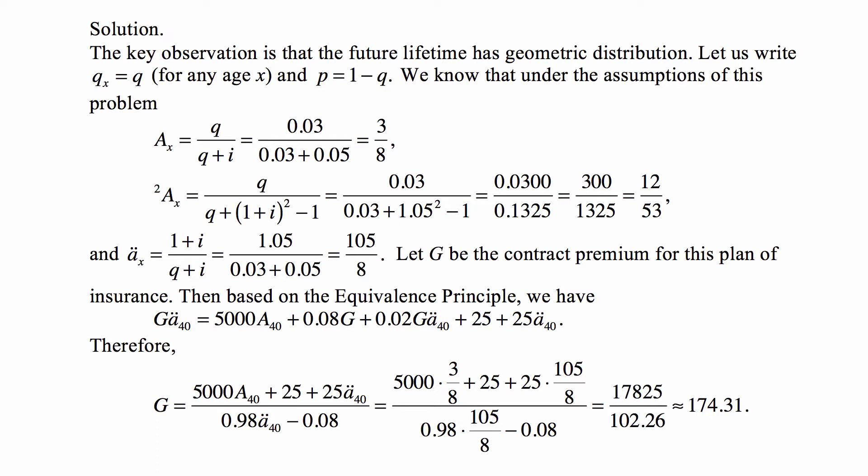A double dot x is (1+i)/(q+i). So in this case, 1.05/(0.03 + 0.05). Again, worthwhile to memorize, but you can also derive it from the formula for ax and from what I call the David Ricardo formula that gives you the relationship of big Ax and A double dot x. So this is 105/8.